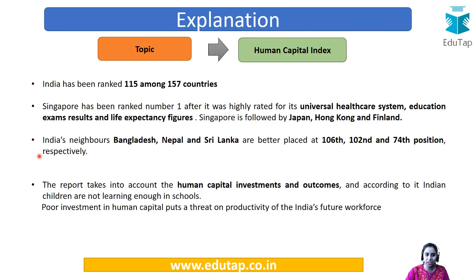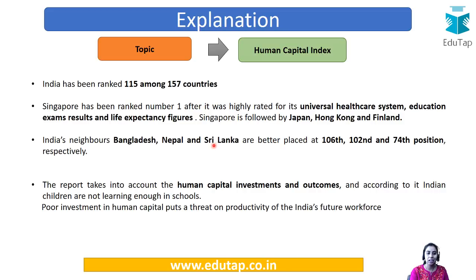Singapore is followed by Japan and Hong Kong, so the top three nations are Singapore, Japan, and Hong Kong, with Finland at fourth. Another important point: India's rank of 115 is worse than Bangladesh, Nepal, and Sri Lanka. That means in South Asia, India's performance is really poor.